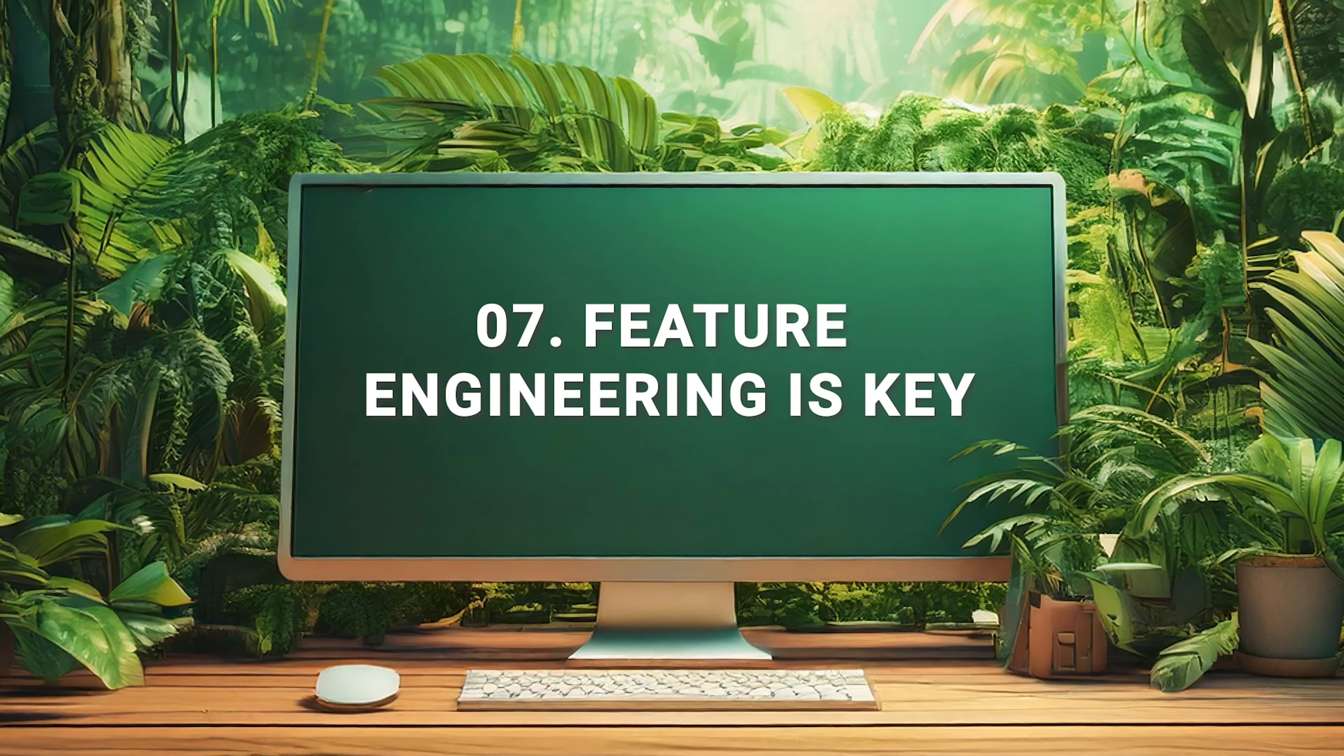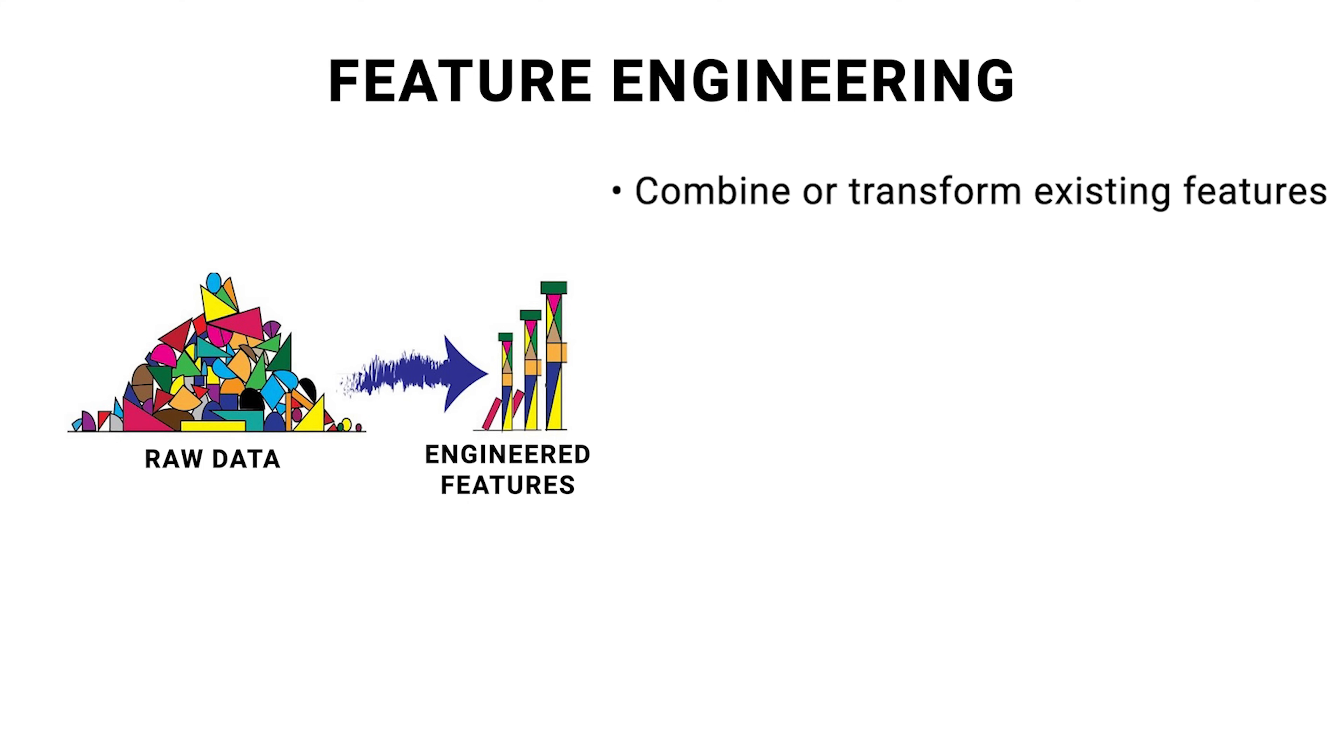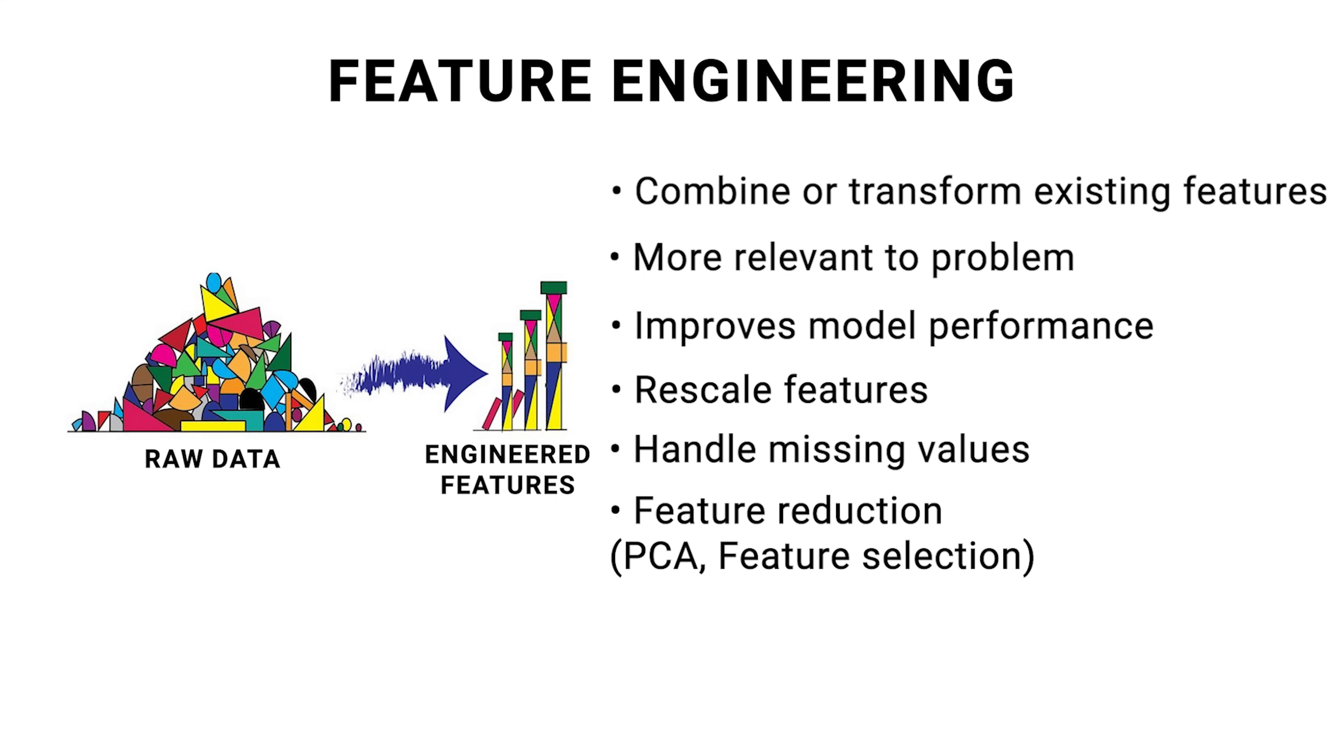Feature engineering is key. Crafting meaningful features can often have a bigger impact on model performance than tuning hyperparameters or choosing advanced algorithms. Feature engineering involves creating new features from raw data, such as combining or transforming existing features to make them more relevant to the problem, improving model performance. Rescaling features ensures that variables with different units or ranges don't disproportionately influence the model. In tandem with EDA, feature engineering often involves handling missing values, either by imputing them or creating binary indicators for missingness. Techniques like principle component analysis, PCA, or feature selection methods help reduce the number of features, improving model efficiency and preventing overfitting.